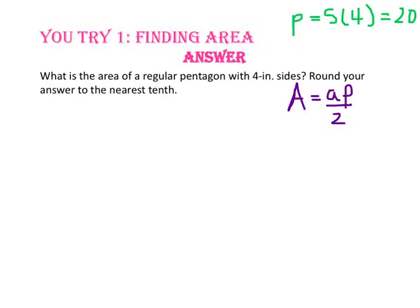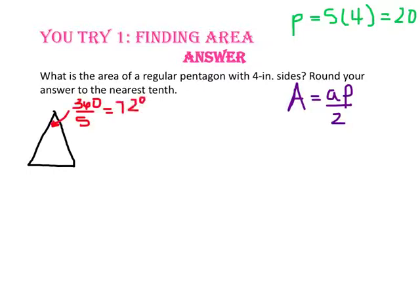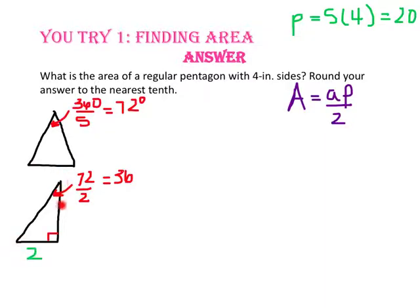To find the apothem, we are going to have to use trig. We know that a pentagon has 5 congruent isosceles triangles. Each of these angles will be one fifth of 360 degrees, so this vertex angle will be 360 divided by 5, or 72 degrees. Drawing in the apothem will divide the 72 degree vertex angle into 2 congruent 36 degree angles. It will also divide the 4 inch side into 2 congruent 2 inch sides. Since we have a right triangle and we know this angle is 36 degrees and the opposite side is 2, we can use a trig ratio to find the length of the apothem.